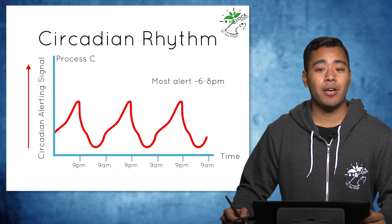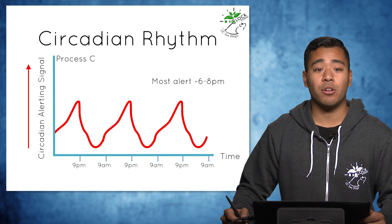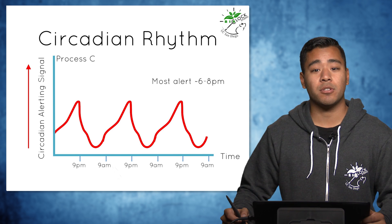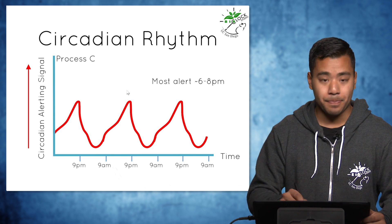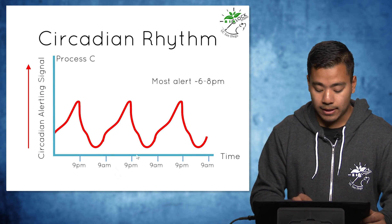Process C is controlled by the same circadian clock that regulates body temperature. This graph plots the circadian alerting signal, which controls how alert the person feels, with its peak around 6 to 8 pm. Conversely, the person would feel least alert around 4 to 6 am.